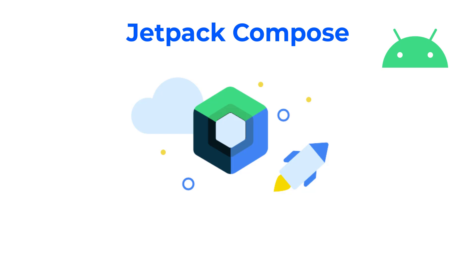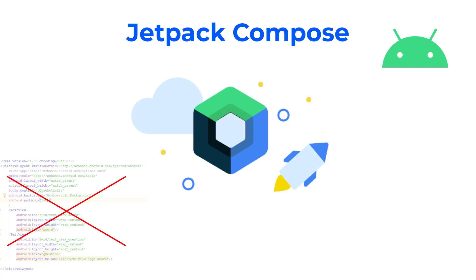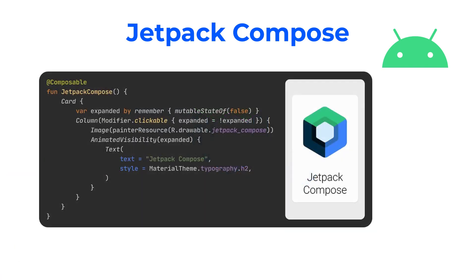On Android, with less code, powerful tools, and intuitive Kotlin APIs, you can build UI components with declarative functions. You don't have to edit any XML layouts or use the layout editor. Instead, you will call composable functions to define what elements you want and the Compose compiler will do the rest. Jetpack Compose is built around composable functions. These functions let you define your application's UI programmatically by describing how it should look and providing data dependencies, rather than focusing on the process of the UI's construction.